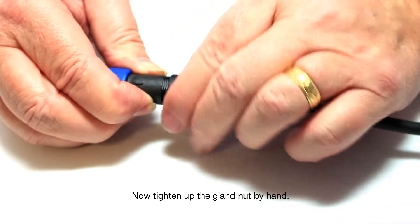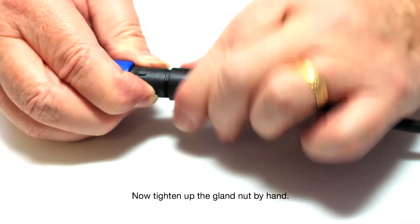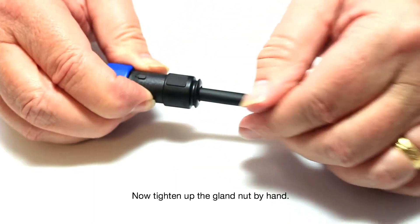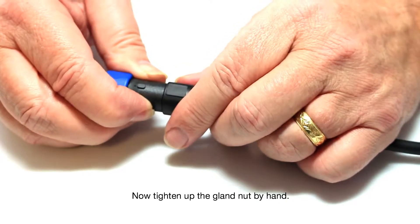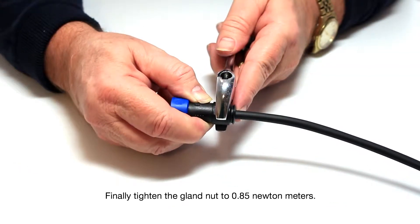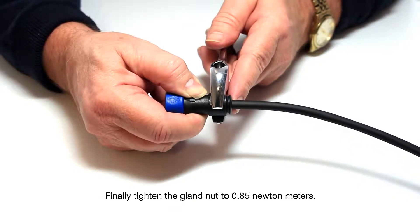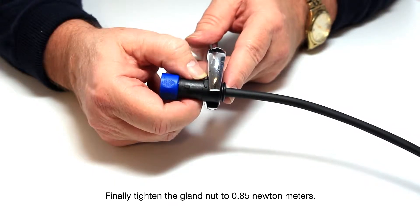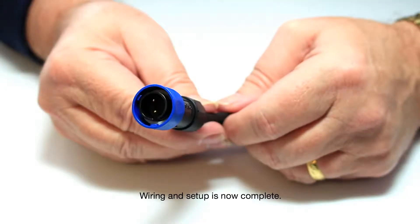Now tighten up the gland nuts by hand. Finally, tighten the gland nuts to 0.85 Newton meters. The wiring setup is now complete.